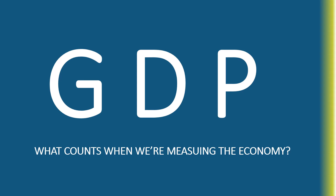GDP counts the total market value of all final goods and services produced within a country during a time period. Dollars are the common denominator of GDP — GDP is measured in dollars. It measures the amount that purchasers pay for goods.